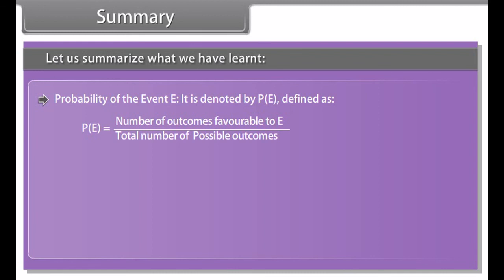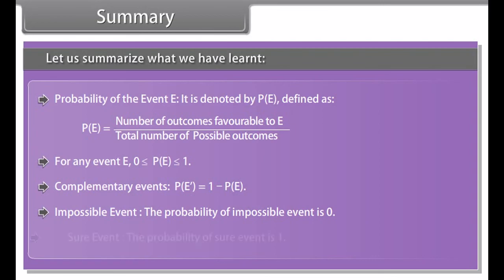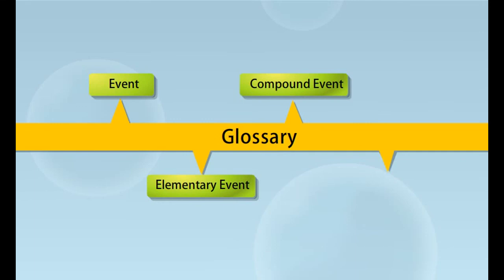Summary: let us summarize what we have learned. Probability of event E is defined as: probability of event E equals number of outcomes favorable to E by total number of possible outcomes. For any event E, 0 is less than or equal to probability of event E, which is less than or equal to 1. Complementary events: probability of event not E equals 1 minus probability of event E. Impossible event: the probability of an impossible event is 0. Sure event: the probability of a sure event is 1.